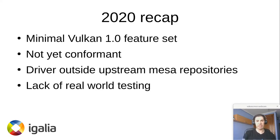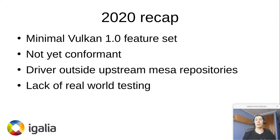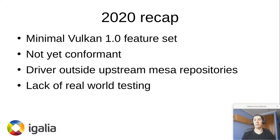Starting with a quick recap of where we were a year ago when we presented the driver for the first time at XDC, we had a minimal Vulkan 1.0 implementation. And when I say minimal, I really mean fairly minimal in the sense that Vulkan 1.0 allows for many optional features and extensions that we just didn't have. We were also not conformant at that point — we were close, but still squashing the last few CTS test failures.